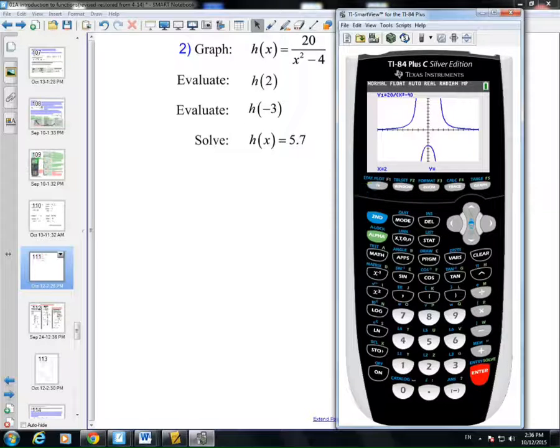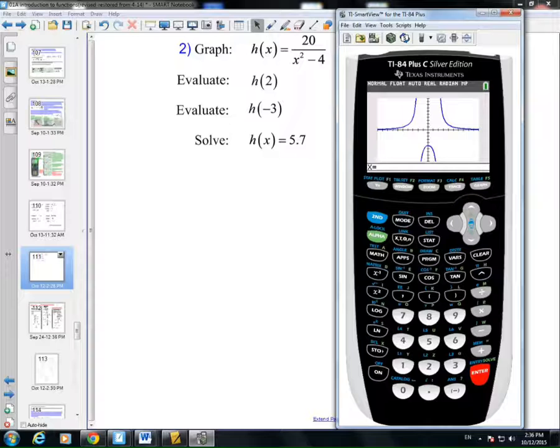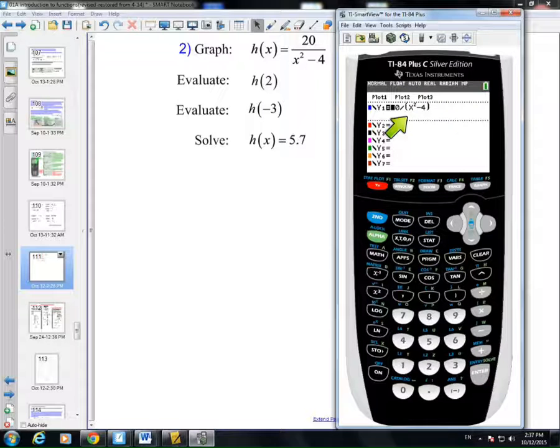So, the value command, once again, it's under your calculate menu. All you have to do is select value, and then you pick any number for x that you want, and the calculator will tell you the corresponding y that goes with it. In case you forgot, what the calculator is doing is it's putting x equals 1 into this value for x, and then it's taking 20 divided by whatever x you chose, minus 4, and all that. So it's using the equation to produce those numbers.